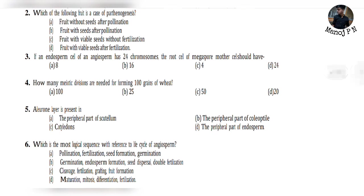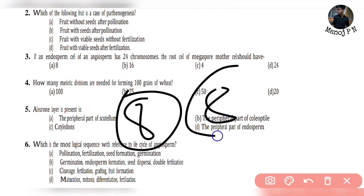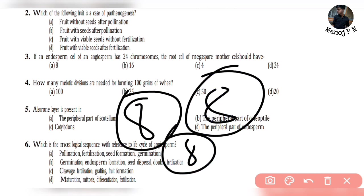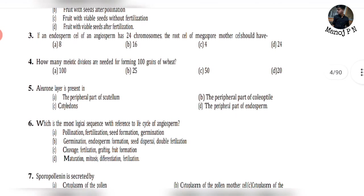Question 3: If an endosperm cell has 24 chromosomes, then the root cell of the megaspore mother cell has how many? Endosperm has a triploid condition. So if endosperm has 24 chromosomes, the megaspore mother cell will have 16 chromosomes — diploid condition, 8 plus 8. Answer is 16.